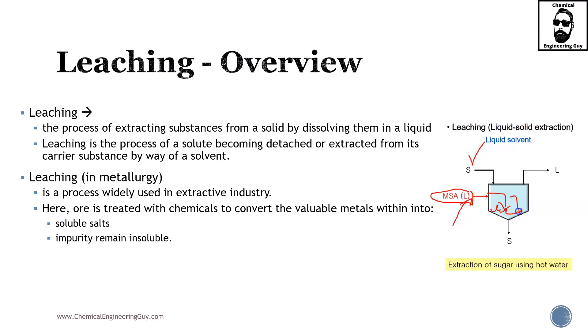The liquid interacts and dissolves specifically certain materials. Most or some of the solid particles will remain solid, and some of the chemicals or species of interest will dissolve from the solid phase into the liquid phase. Eventually what you extract is the solvent plus all the dissolved solids — leaching is the process of a solid becoming detached or extracted from its carrier by way of a solvent.